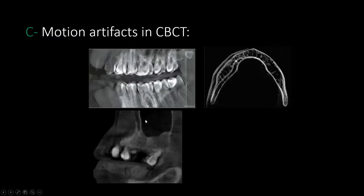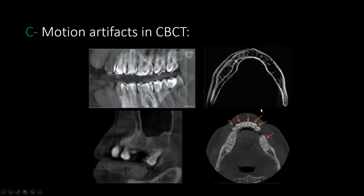In the maxilla, you also look for doubling of cortical plates — for instance, look at the anterior wall of the sinus, the posterior wall, and the floor of the sinus. If you see this doubling, the image has a motion artifact and is not recommended for use. Make sure you check the CBCT before your patient leaves the office to confirm it is free of motion. Accurate treatment planning is only possible with a CBCT that is free of motion artifacts.